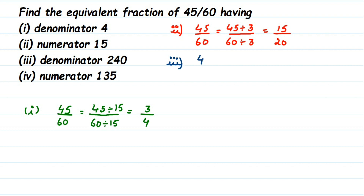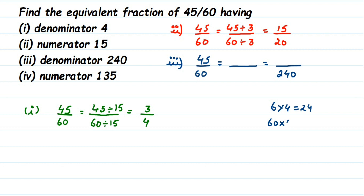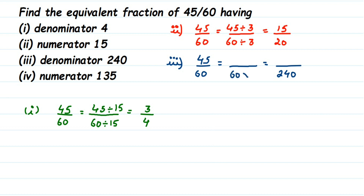The number is 45 by 60 and they want the denominator to be equal to 240. If I divide 60 by a number I will not get 240 — the number would become smaller — so we are multiplying. We need to find what number to multiply to get 240. Since 6 fours are 24, we know 60 multiplied by 4 equals 240. So we multiply by 4 in the numerator as well: 45 times 4 is 180. The answer is 180 by 240.